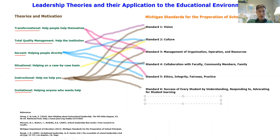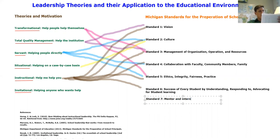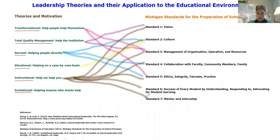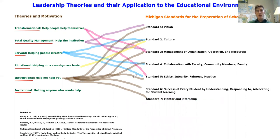I'll add standard seven since I didn't include it — mentor and intern program. The building-level educator leader applies knowledge that promotes the success of every student through a substantial and sustained educational leadership internship program. The adult learning component is important because it's essential we pass these skills and knowledge on to the next generation. For example, if I'm going to be a superintendent, it would be very nice to learn from someone underneath them as they progress or leave their career — some sort of sustainable internship program would be ideal.